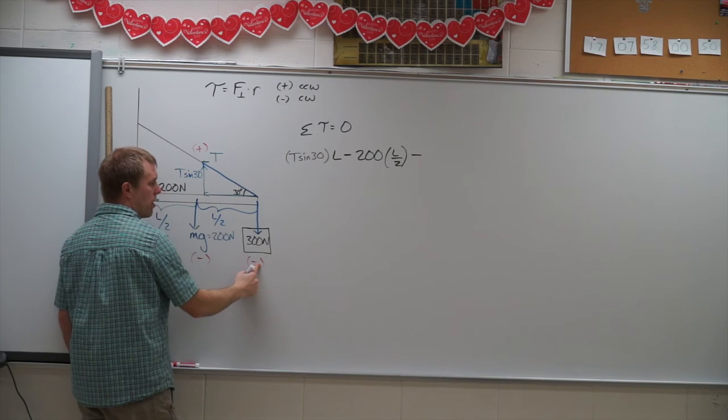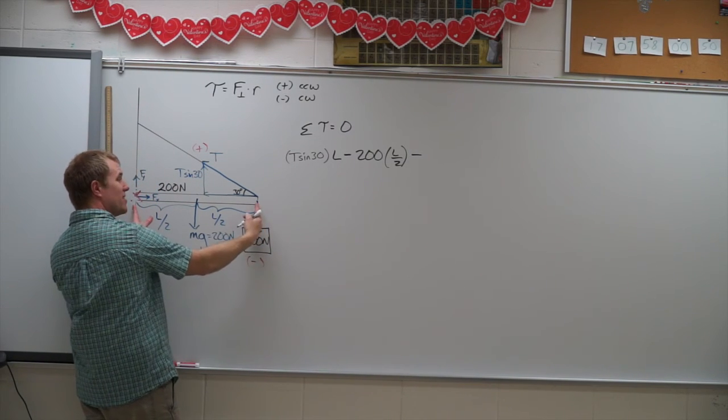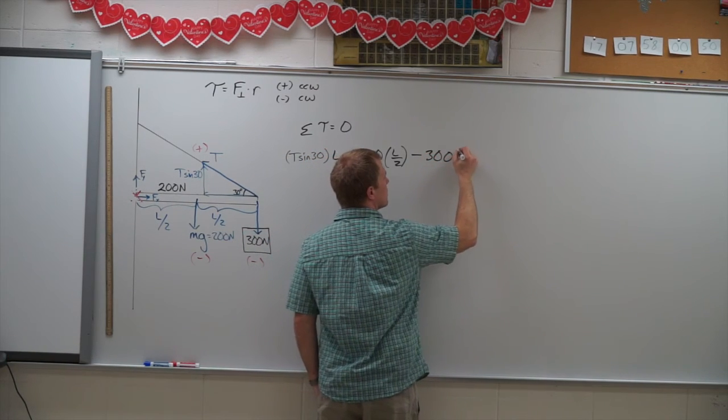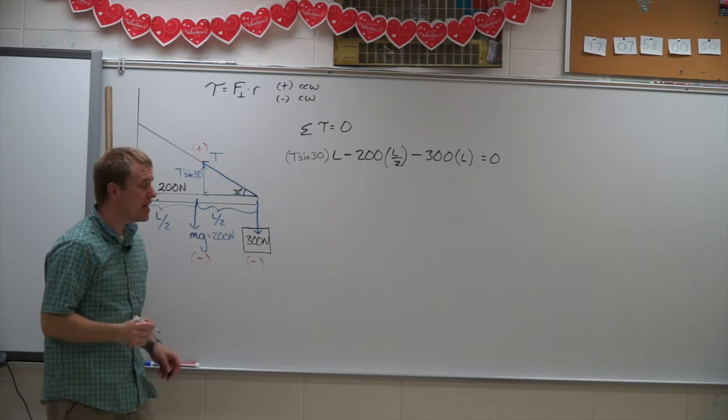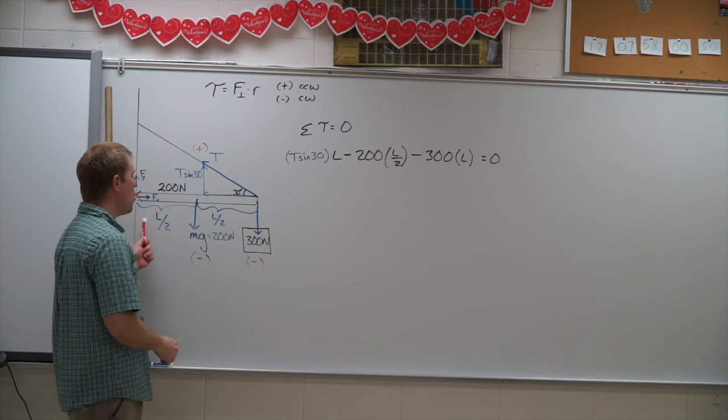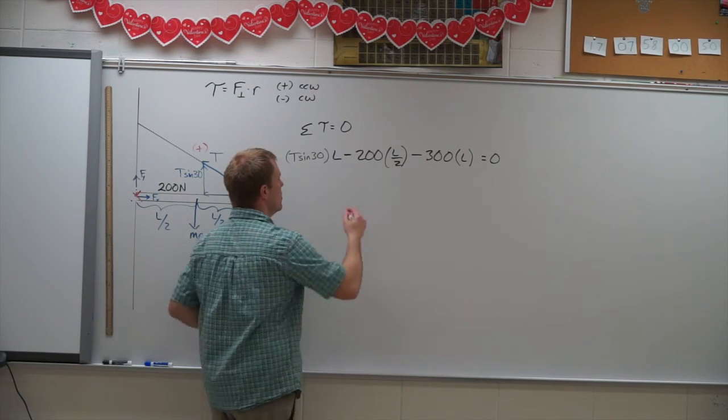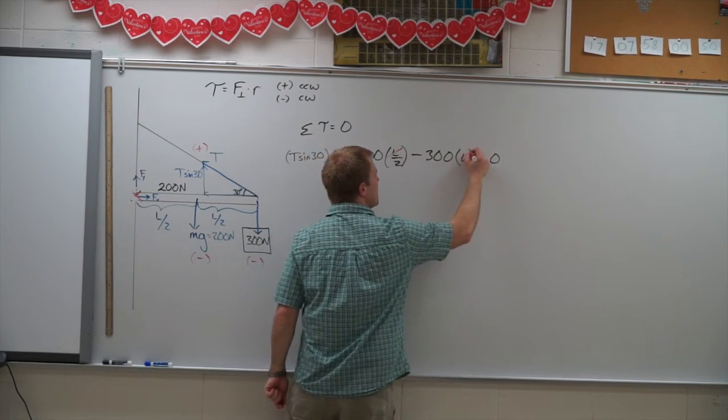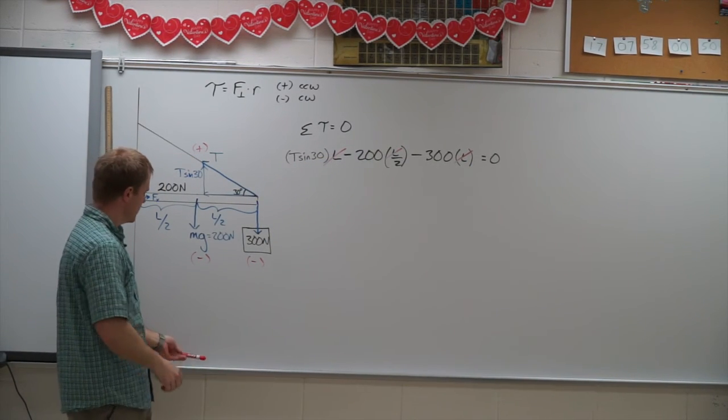Minus, again because it's causing a clockwise torque, my 300 Newtons times its distance away, which is L. All adds up to zero. Now the nice thing here is as long as I go with that L value, all of the L's cancel. So I really just need the proportional locations. I don't need their actual locations.